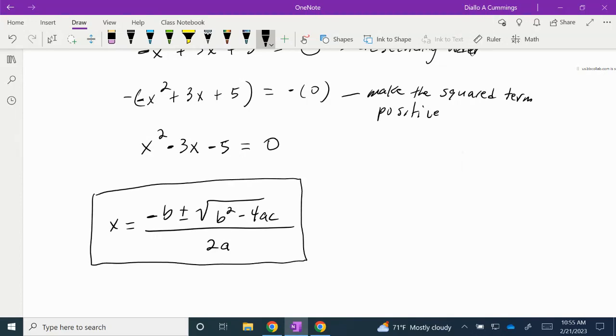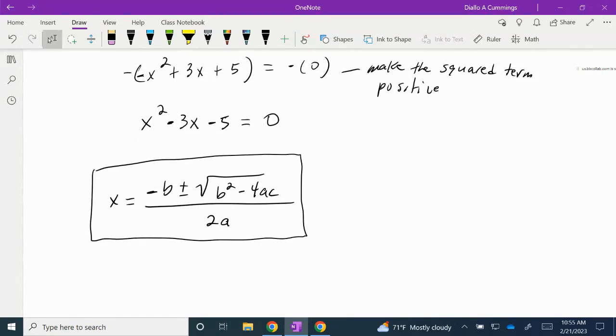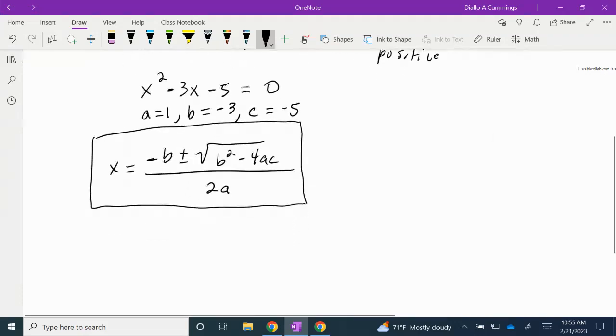a would be the coefficient of our squared term, so this coefficient is an understood 1. So a = 1. b is going to be the coefficient of the middle term, so b = -3. And c is going to be our constant, which is -5. We're going to use these in the quadratic formula.